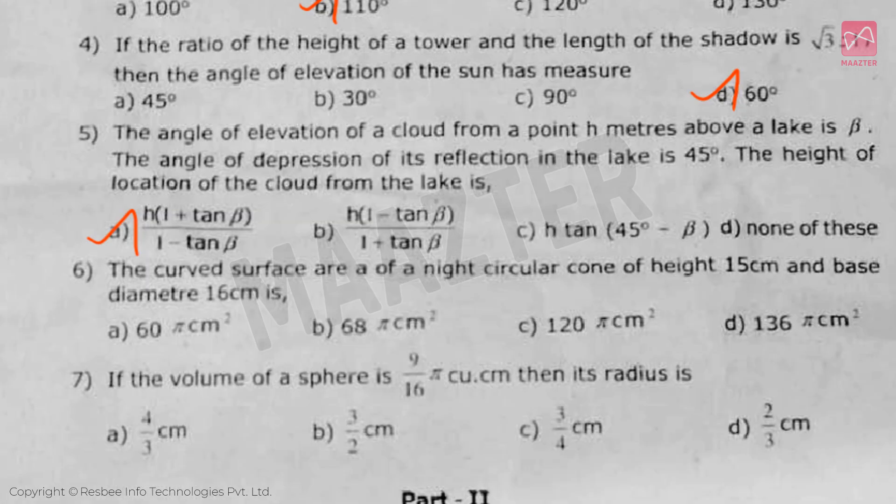Next, the curved surface area of a right circular cone of height 15 cm and base diameter 16 cm is, answer is option D.